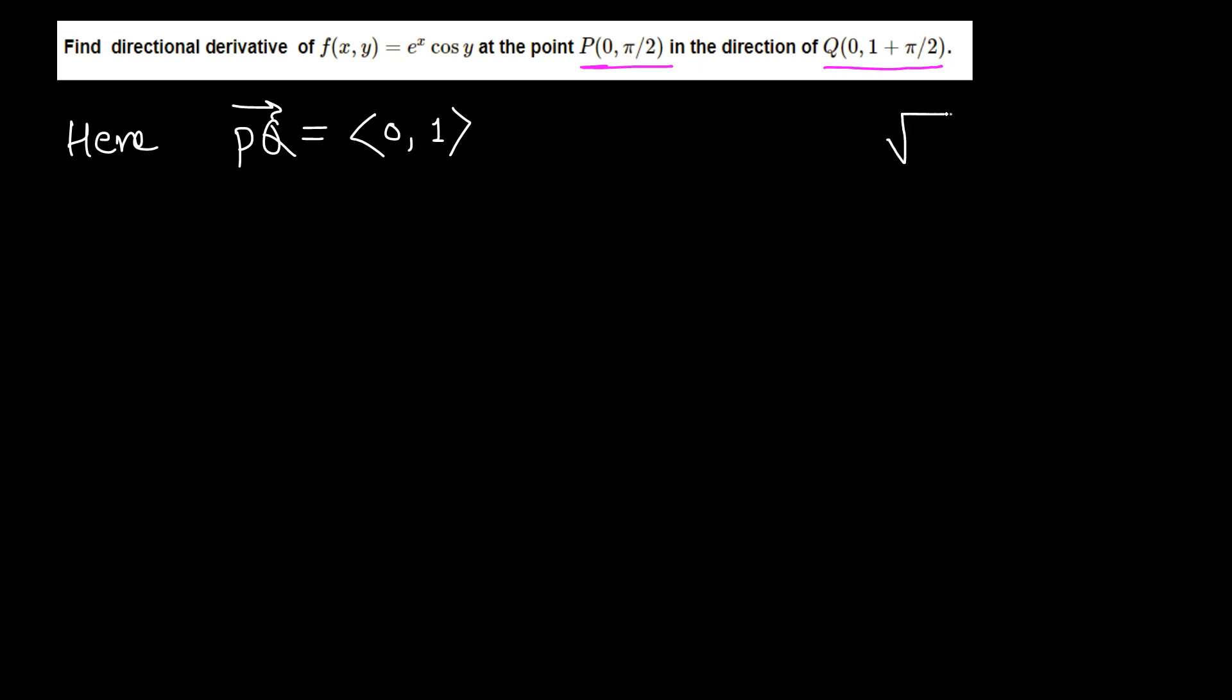And if we find the magnitude of (0, 1), which is 0 squared plus 1 squared, that equals 1. So this happens to be a unit vector and we don't have to scale it up or down. This is already a unit vector.